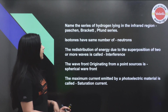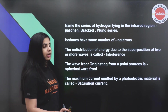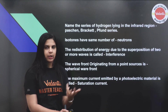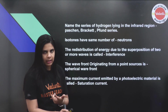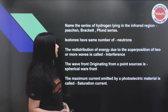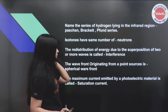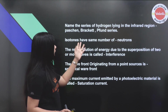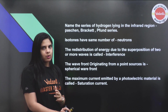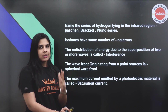The name of the series of hydrogen lying in the infrared region — you will have options to look at for this series. Isotones are defined by the number of neutrons. You can also learn isotopes and isobars.